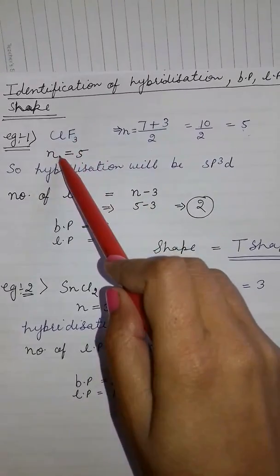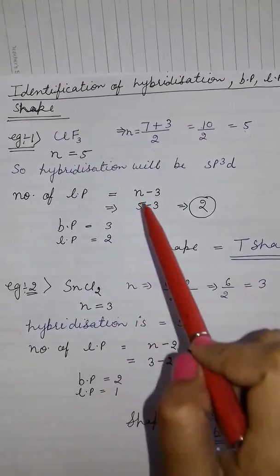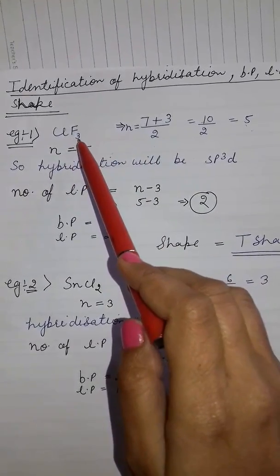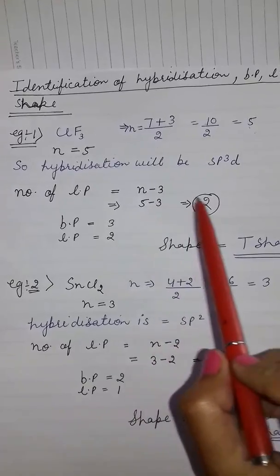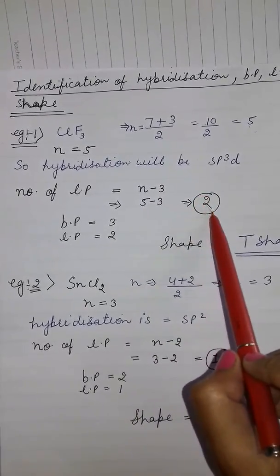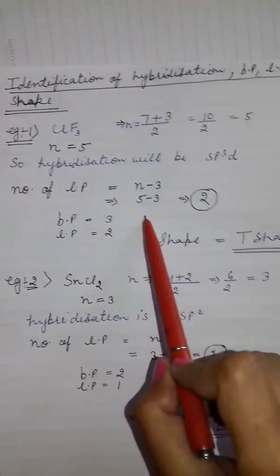atoms attached to the central atom means n equals 5 and number of fluorine is 3 here. So n minus 3 equals 5 minus 3. We get lone pairs are 2. Bond pairs are 3 and lone pairs are 2.